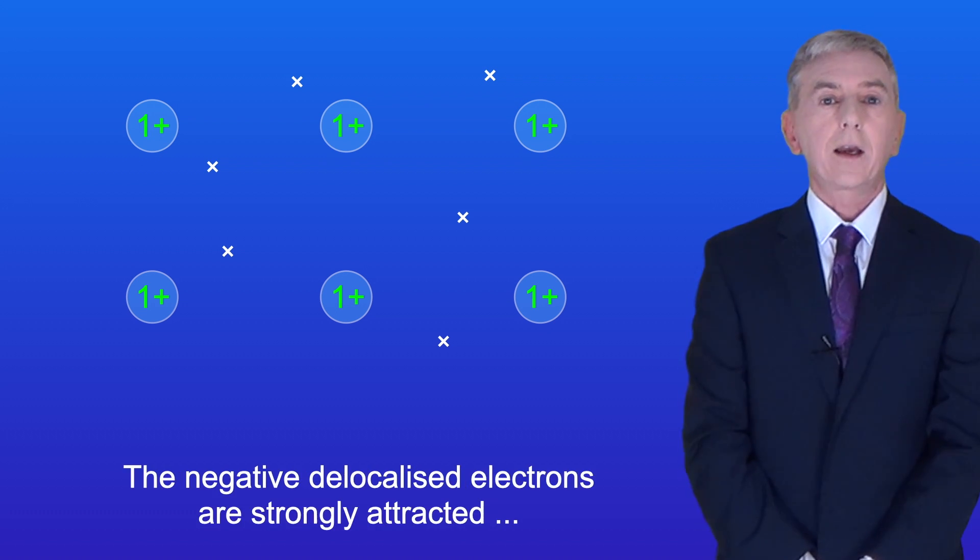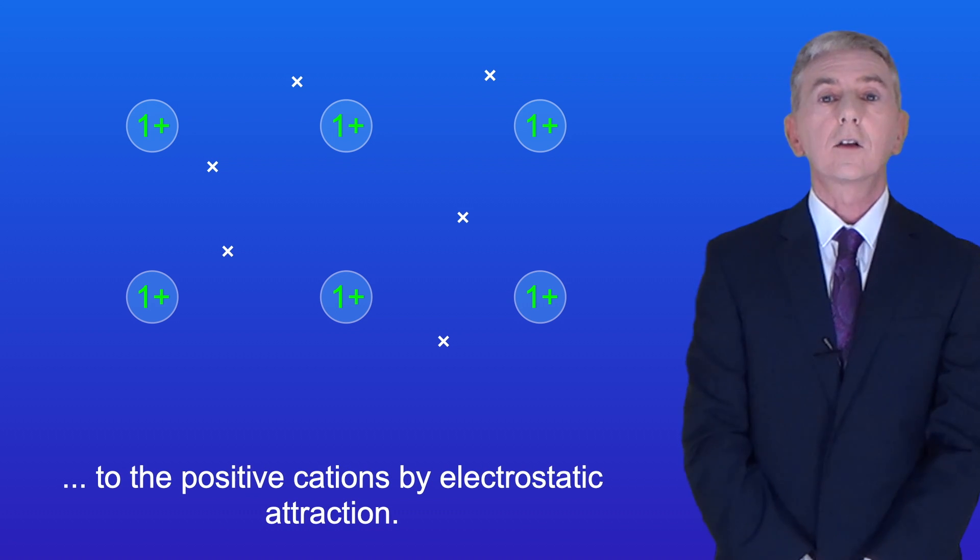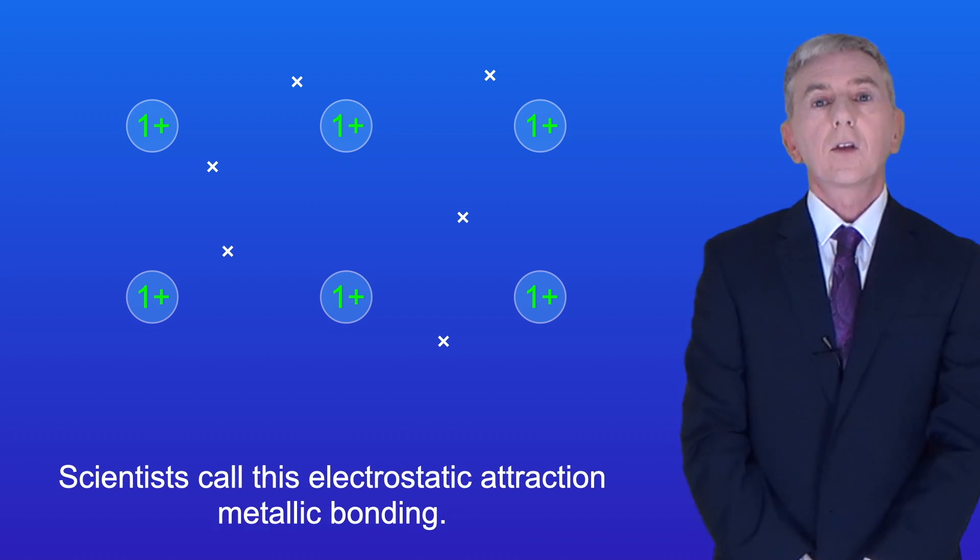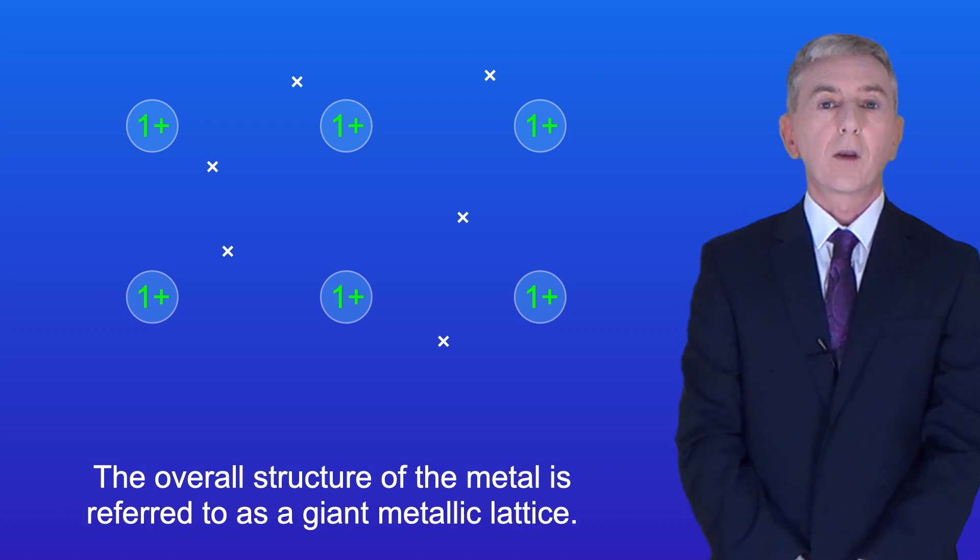The negative delocalized electrons are strongly attracted to the positive cations by electrostatic attraction. Scientists call this electrostatic attraction metallic bonding and the overall structure of the metal is referred to as a giant metallic lattice.